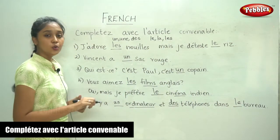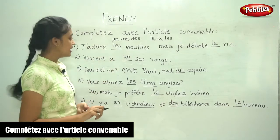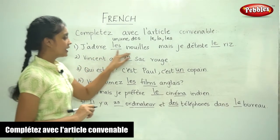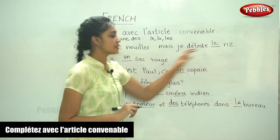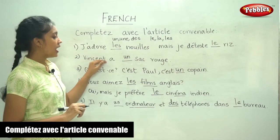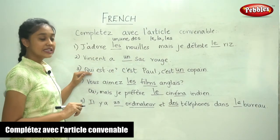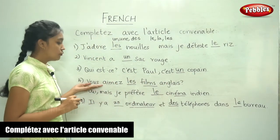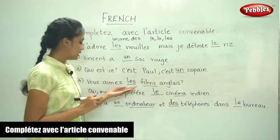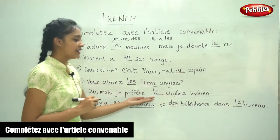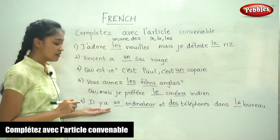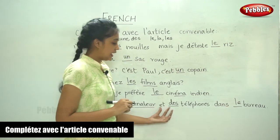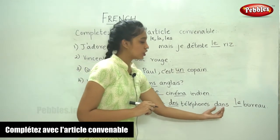So this is how we fill in the definite and indefinite articles. Let me read these sentences once again: 'J'adore les nuits, mais je déteste la riz.' 'Vincent a un sac rouge.' 'Qui est-ce? C'est Paul. C'est un copain.' 'Vous aimez les films anglais? Oui, mais je préfère les cinémas indiens.' Finally, 'Il y a un ordinateur, et des téléphones dans le bureau.'